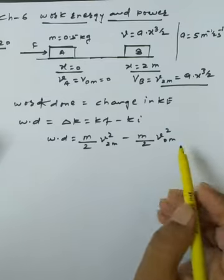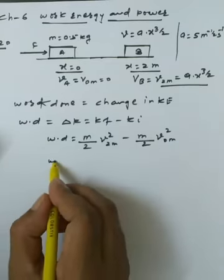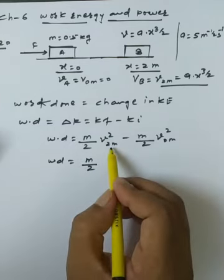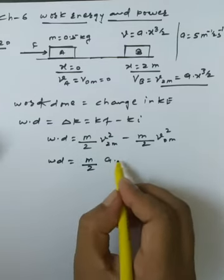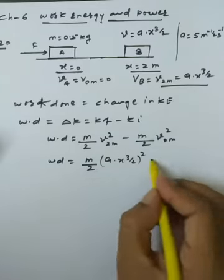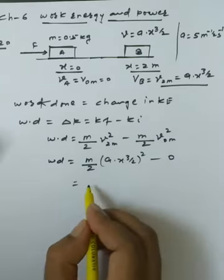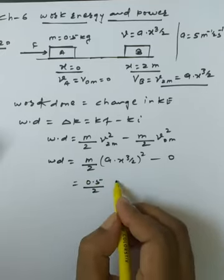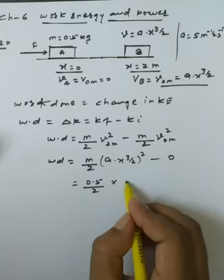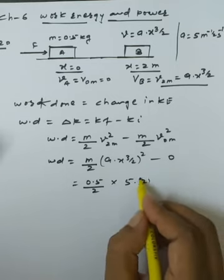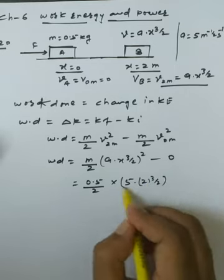We can directly put 0 for the initial velocity term. So work done = (m/2)·(ax^(3/2))² − 0. Substituting values: (0.5/2)·(5·2^(3/2))².